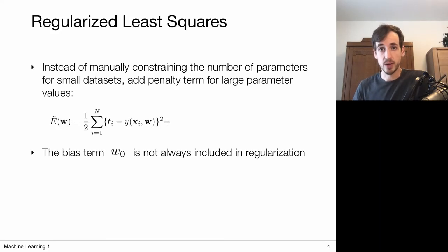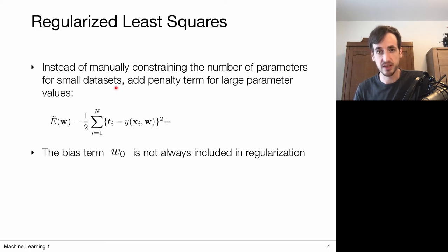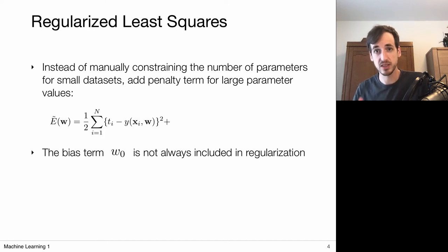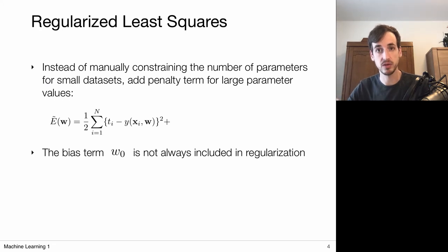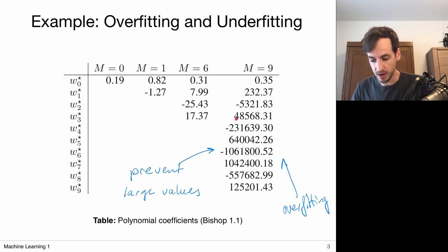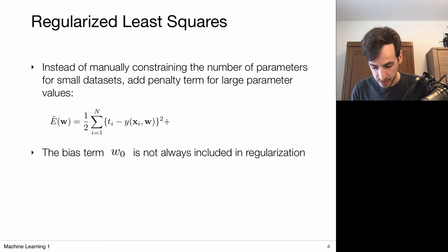With these observations in mind, let's make a heuristic choice. Instead of manually constraining the number of parameters for small data sets — because overfitting occurs when I have little data and I choose the number of basis functions — let's just say I'm going to work with a high order model because it can represent a lot of functions, including the nice ones. And I'm just going to add a penalty term that suppresses these large weight values.